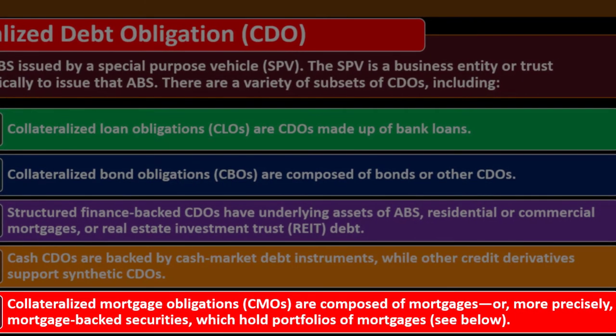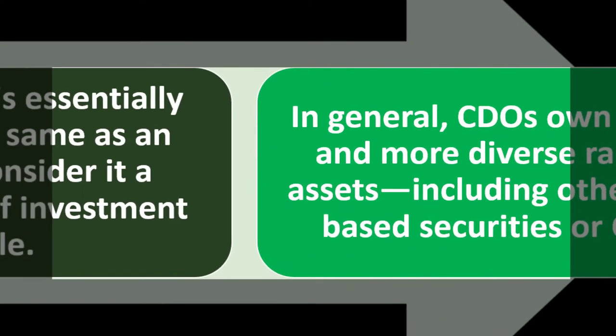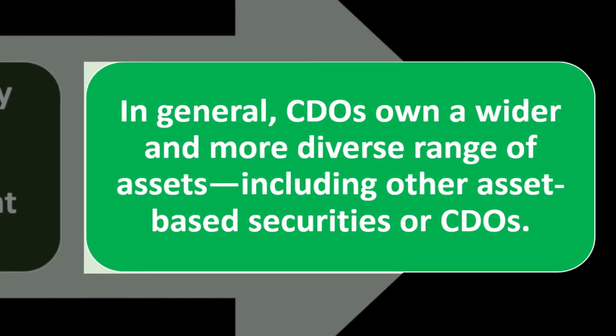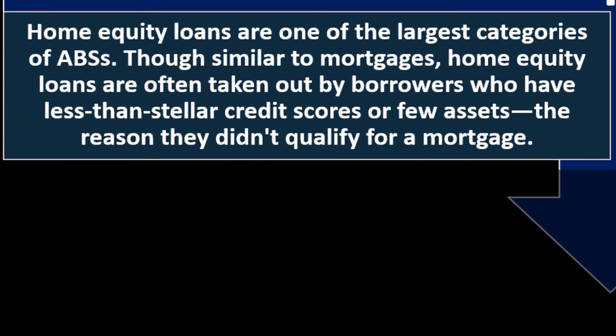Collateralized mortgage obligations (CMOs) are composed of mortgages, or more precisely mortgage-backed securities, which hold portfolios of mortgages. Though a CMO is essentially structured the same as an ABS, some consider it a separate investment vehicle. In general, a CDO owns a wider and more diverse range of assets, including other asset-backed securities or other CDOs.